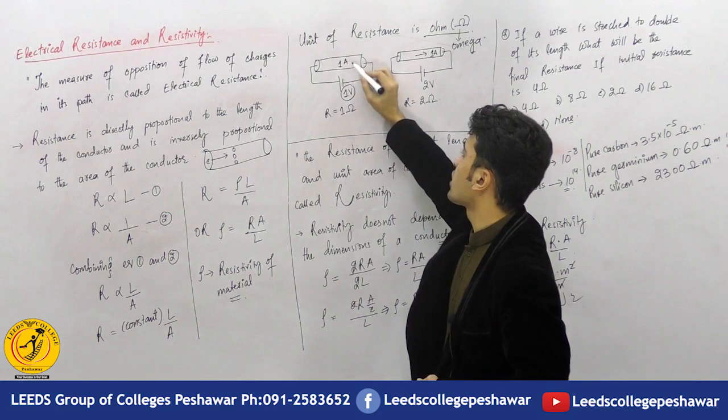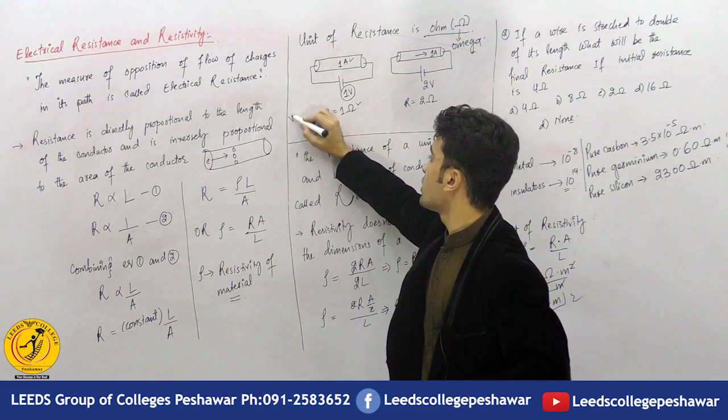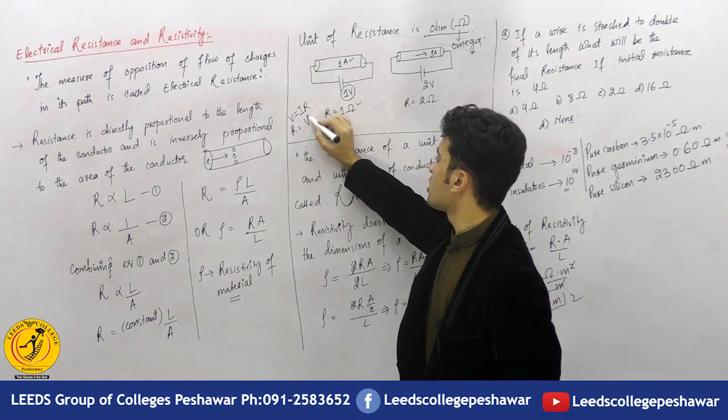One Ohm resistance is defined according to the voltage equation V = IR, so resistance equals voltage divided by current. If the voltage is 1 volt and the current is 1 ampere, then the resistance is 1 Ohm.